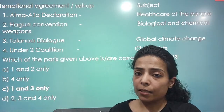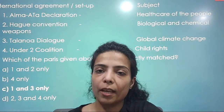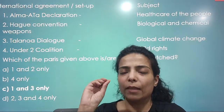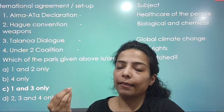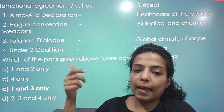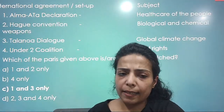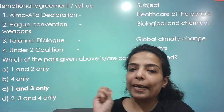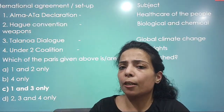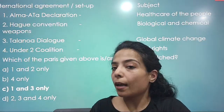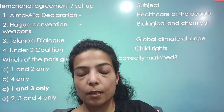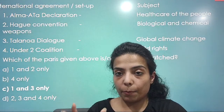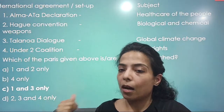Here are the conventions-related questions — as we discussed in our classes, questions that come from declarations or conventions or summits are quite easy. If you have one or two ideas, you will easily guess the answer. The question was: Alma-Ata declaration, Hague Convention, Talanoa Dialogue and Under 2 Coalition. The most highlighted conventions in news were Hague Convention, related to child rights, and Talanoa Dialogue, related to climate change. The answer was C — 1 and 3.